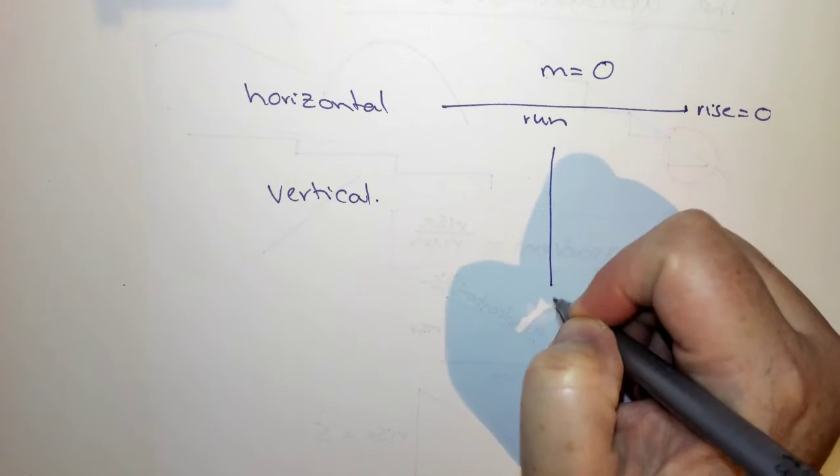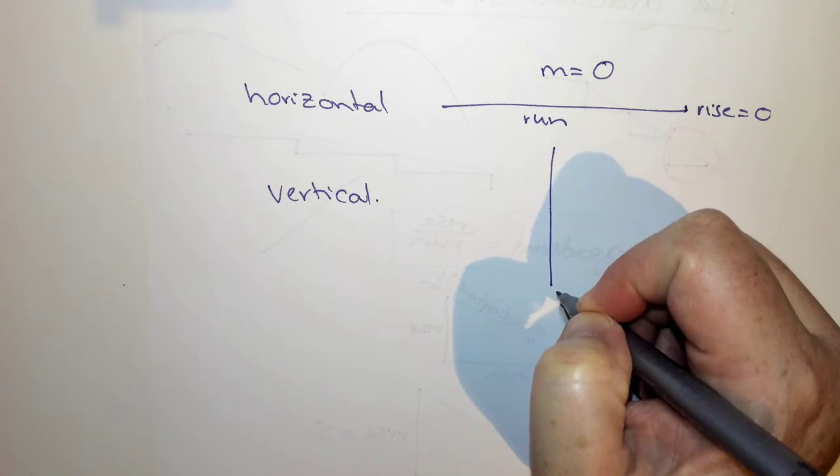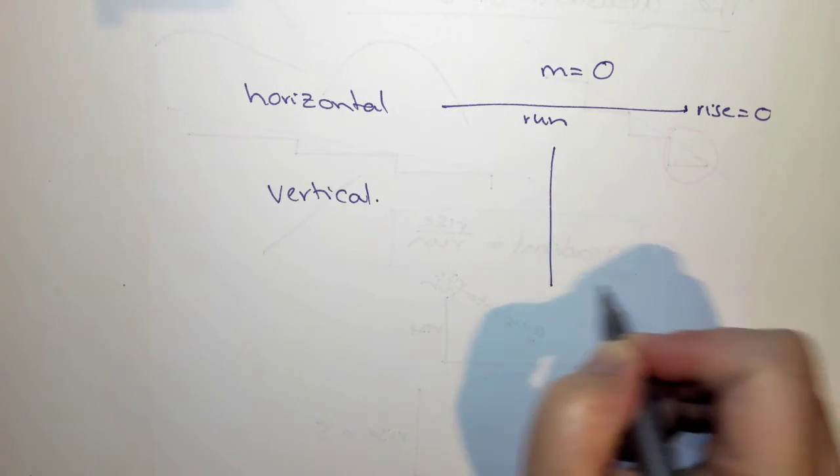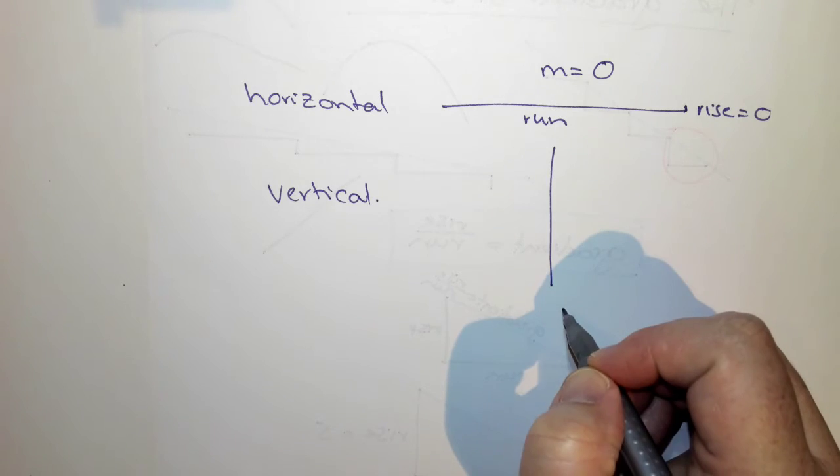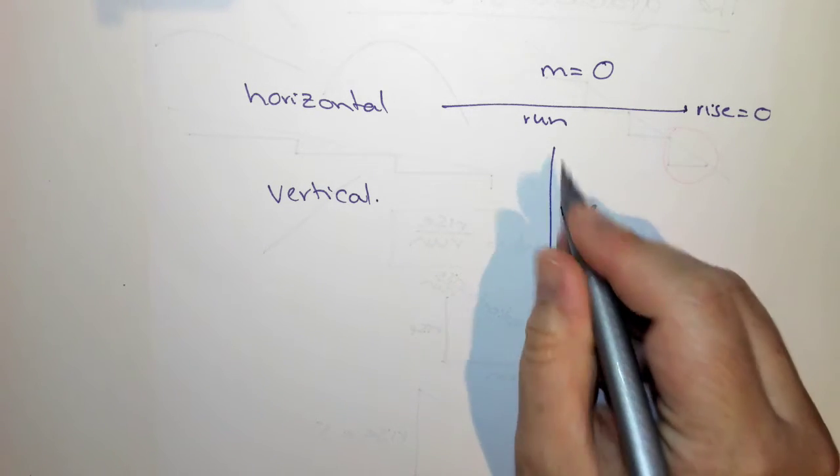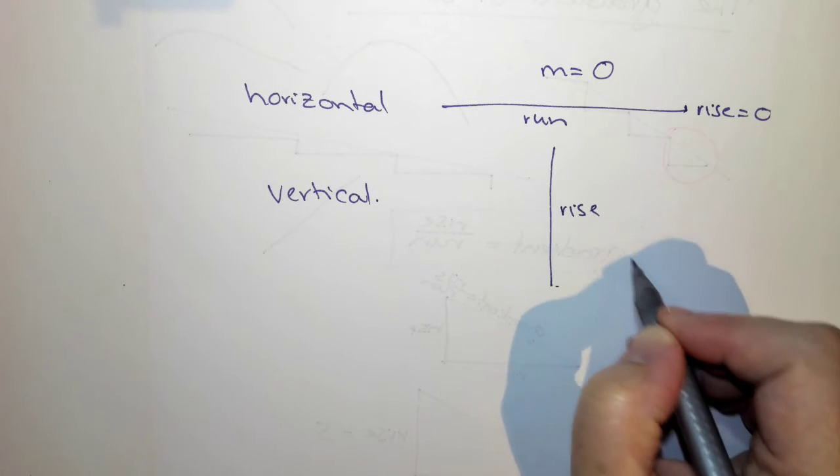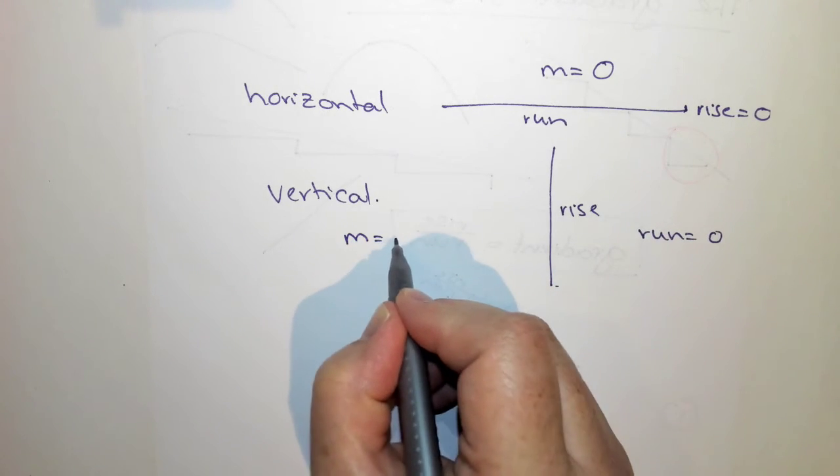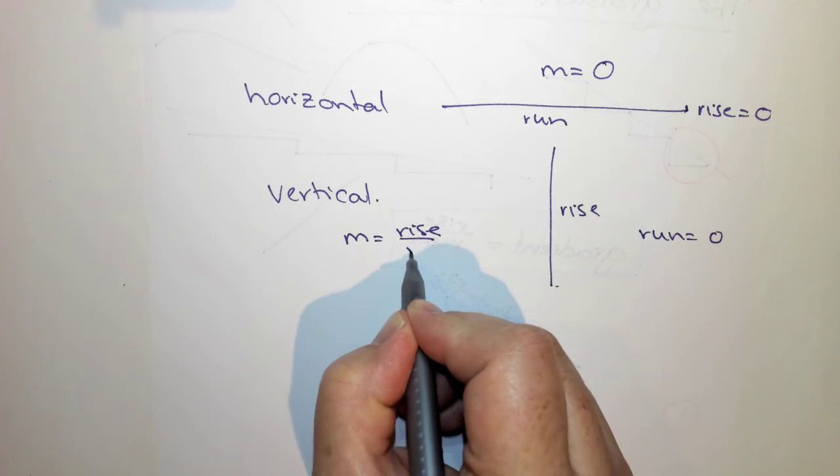But what if I've got a vertical line now? So if I've got a vertical line, then again, I'm not going along this time. I'm going down, so I've got a rise. I'm going up or down, but I'm not going along. I've got no run, so the run is 0. So in terms of our gradient, rise over run, our rise could be a number, say 5, divided by 0.